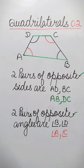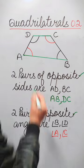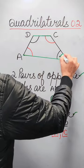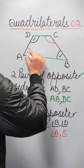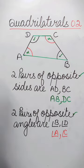Opposite angles do not have any common arms. So angle B and angle D, angle A and angle C are pairs of opposite angles.